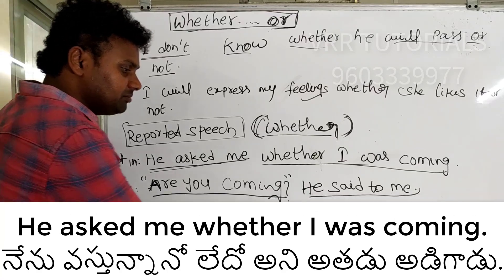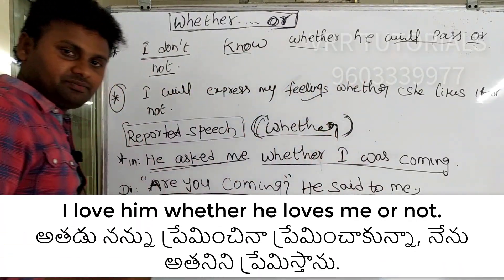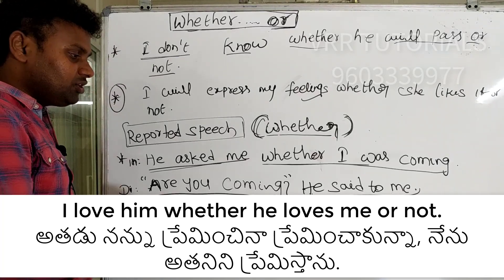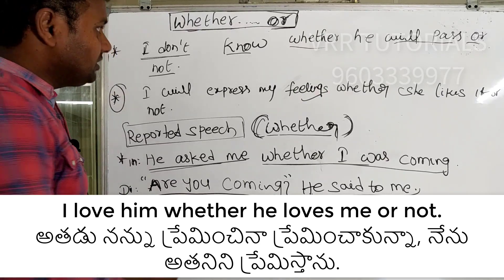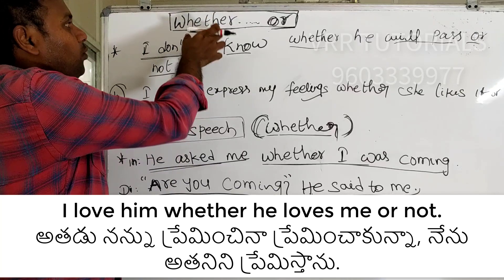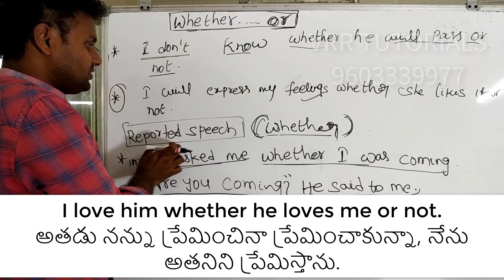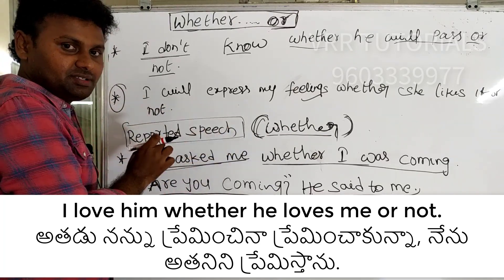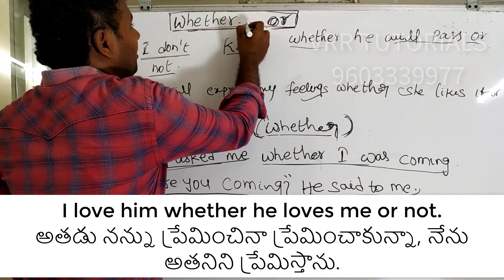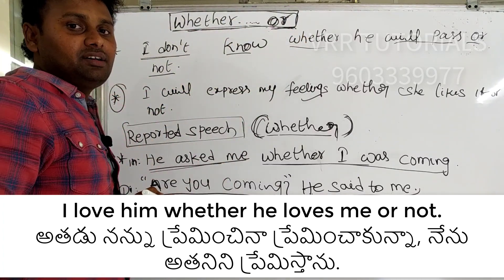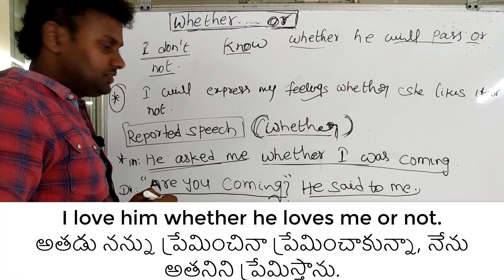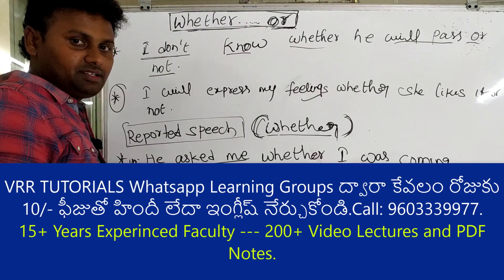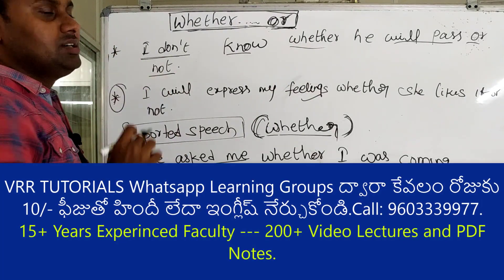Another example: I would love him whether he loves me or not. So we can use 'whether' in two ways: first, in reported speech for yes/no questions; and second, followed by 'or not' to express a condition regardless of outcome. For example: I don't know whether he will pass or not.